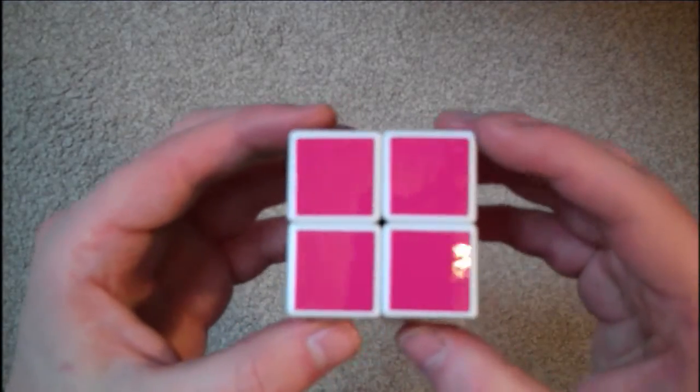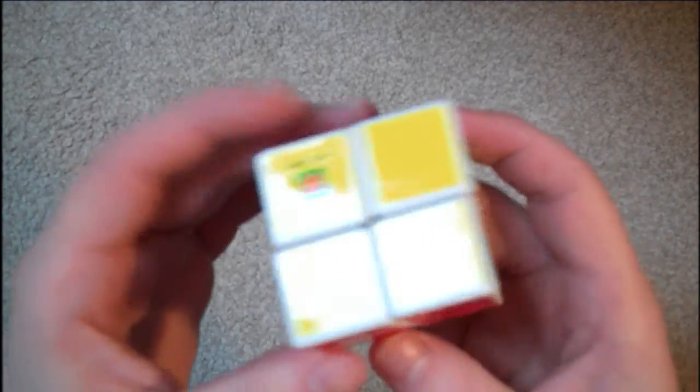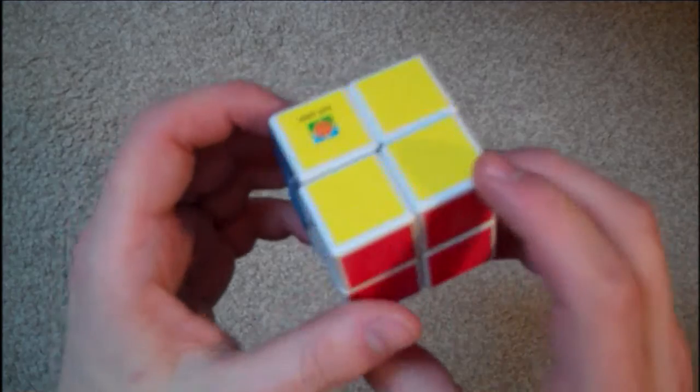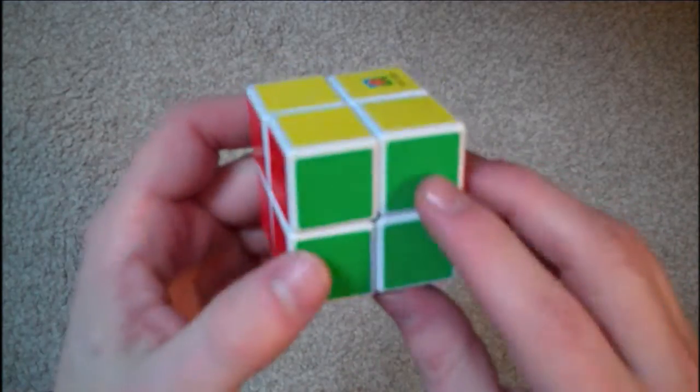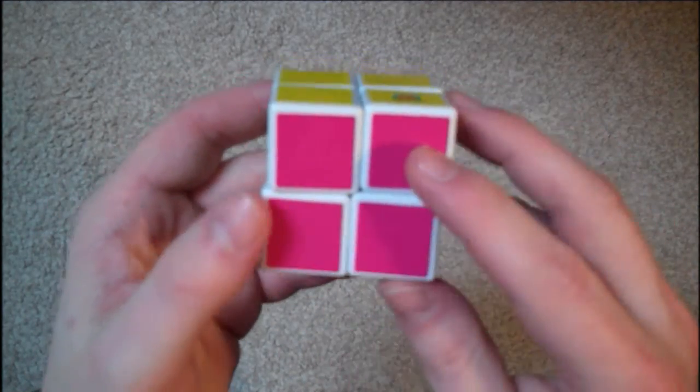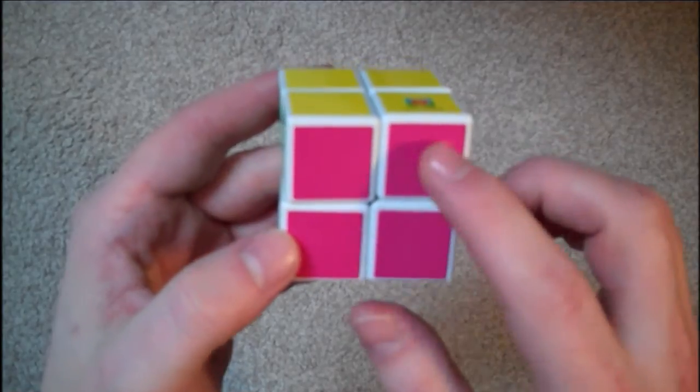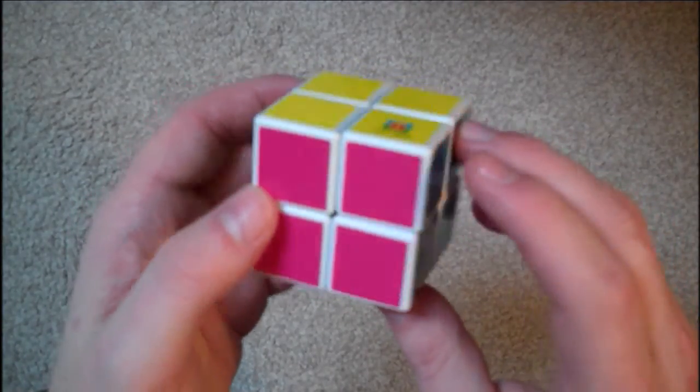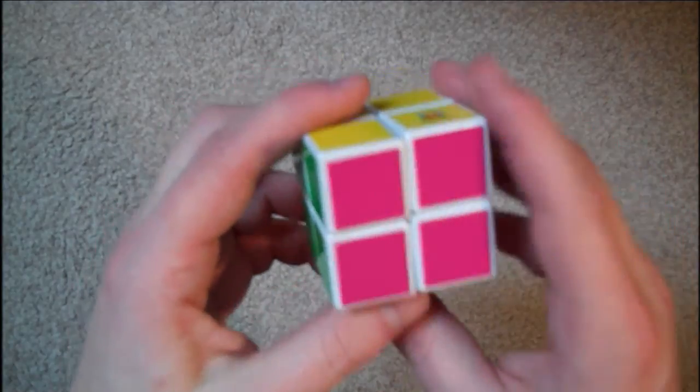And here is the cube itself. So, as you can see, the colours are black, yellow, and then you've got red, green, pink, kind of almost a light purple, but I guess you'd call it a pink, and blue.